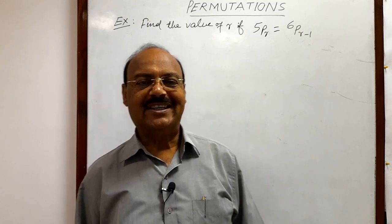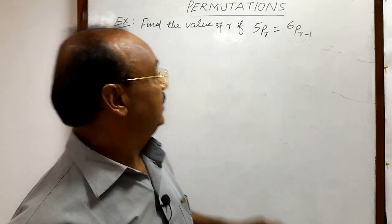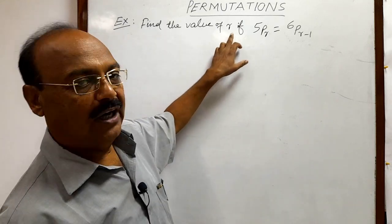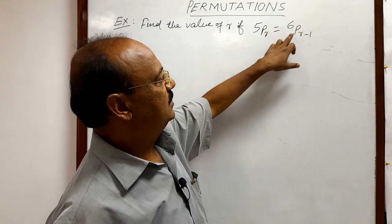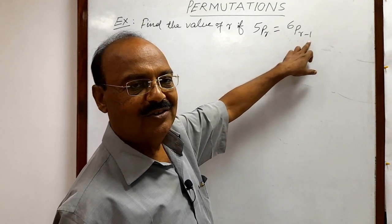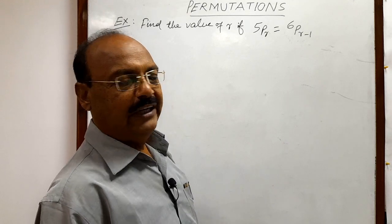Welcome students, today we are going to discuss a very interesting question from the topic permutations. Here the question is: find the value of r if 5Pr is equal to 6P(r-1). So let us try to find out the value of r.